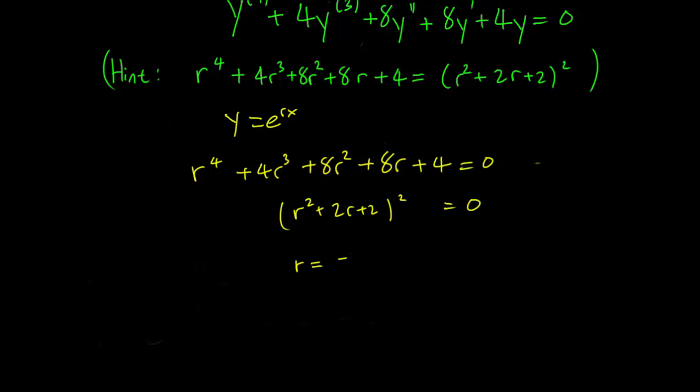We find r = (-2 ± √(b² - 4ac))/2a, which gets us r = -1 ± i.